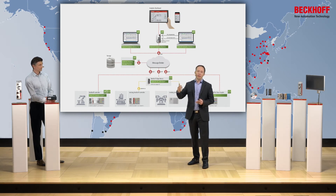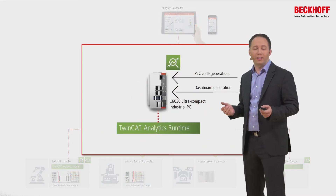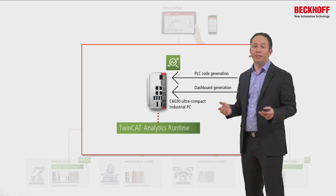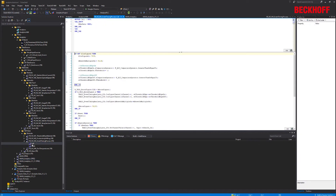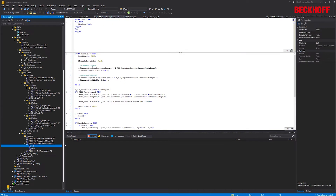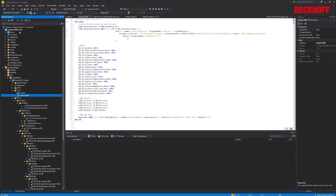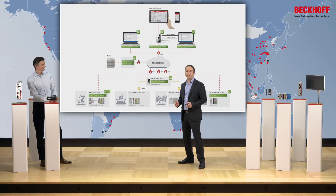This brings us to the TwinCAT Analytics Runtime, which is a bundle of licenses offering — besides the algorithm, communication, and PLC runtime — a complete HMI server and HMI client package. Through code generation, you get completely open projects for the PLC and HMI, meaning you can make individual changes in all projects. It is not black-box code; it is open code, which is very important because you can make changes right down to the last bit in your application.